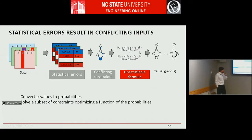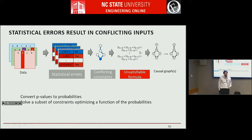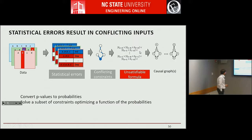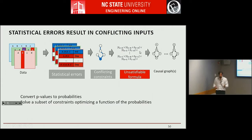Another technical intricacy is that you will almost surely have statistical errors from your tests, which will give you conflicting constraints and unsatisfiable formulas. You need a way to resolve conflicts. The way we do that is to rank your constraints, maybe on p-values or by converting p-values to a posteriori probabilities, and try to satisfy only a subset of your constraints, optimizing the weight of the probabilities or the log of the weights.